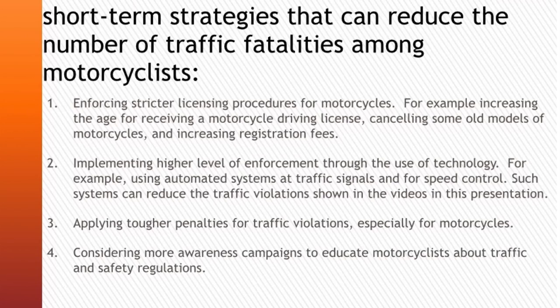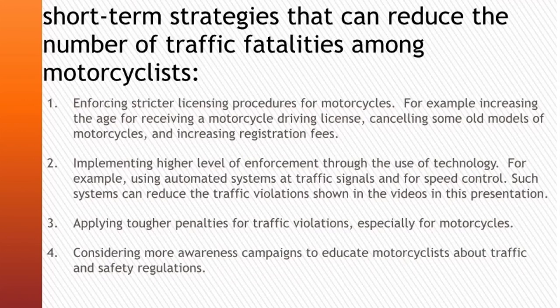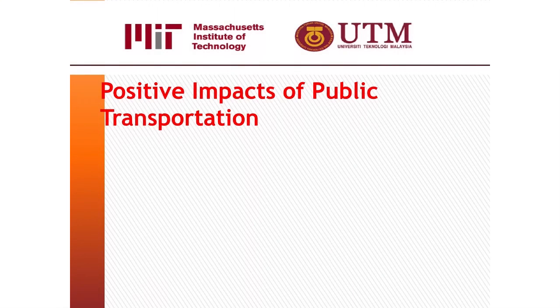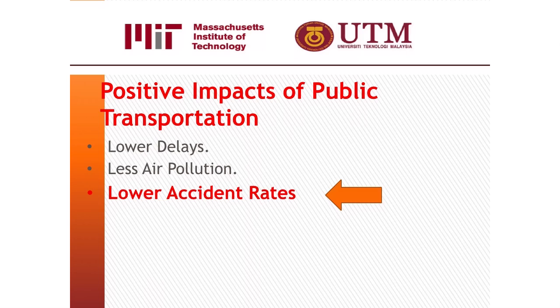Improving awareness through campaigns that educate motorcyclists about traffic and safety regulations is also important. In addition to these short-term strategies targeting motorcycle fatalities, cities should make concerted efforts to improve public transportation infrastructure to ensure long-term sustainability. A higher mode share for public transportation can result in lower delays, less pollution, fewer accidents and fatalities, and a more sustainable transportation system.